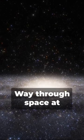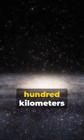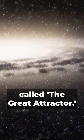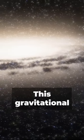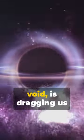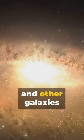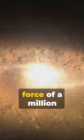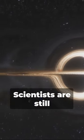Ever wondered what's hurtling our Milky Way through space at a whopping 600 kilometers per second? It's called the Great Attractor. This gravitational anomaly, located in the intergalactic void, is dragging us and other galaxies towards it with the force of a million billion suns.